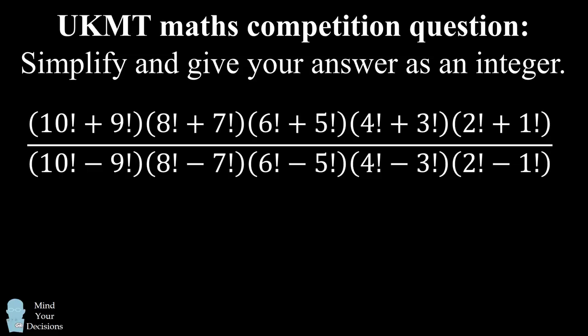The denominator is the same terms, except each pair is a subtraction. So it starts out with 10 factorial minus 9 factorial and it ends with 2 factorial minus 1 factorial.